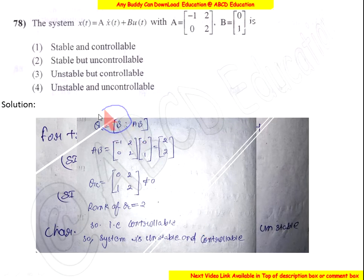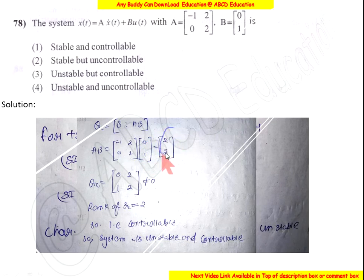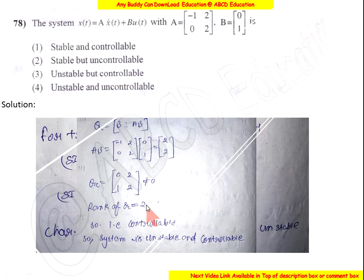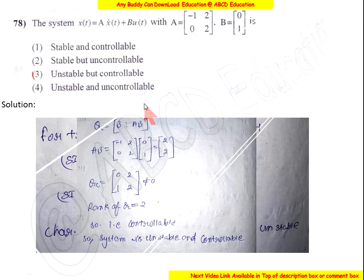Now for controllability, it is defined by the controllability matrix QC, which equals [B | AB]. We find AB by multiplying the A and B matrices. Since QC is not equal to zero, its rank equals 2. When the number of variables equals the rank of this matrix, the system is controllable. So this system is unstable but controllable — the answer is option 3.